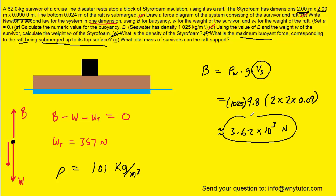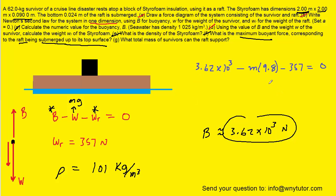And then finally on to part G, what total mass of survivors can the raft support? We can once again return to the Newton's second law equation. We can fill in the maximum buoyant force that we just determined. The weight of the raft we determined earlier was 357 newtons. And then what we can do is replace the weight of the survivors with the expression mg and solve for that mass m. We could solve for the mass m by adding the 357 over to the other side and then subtracting the 3.62 times 10 to the third and then dividing by negative 9.8. When we solve that, we get approximately 333 kilograms. So that would be the correct answer to part G of the question.